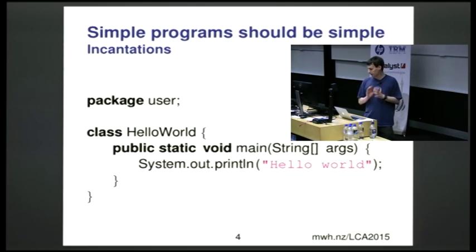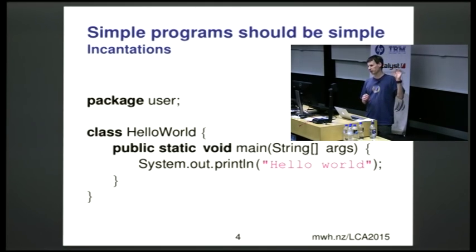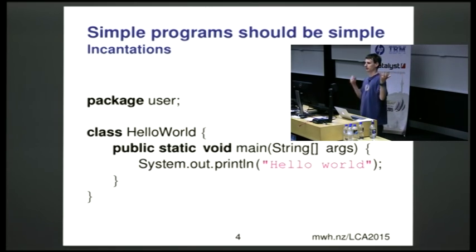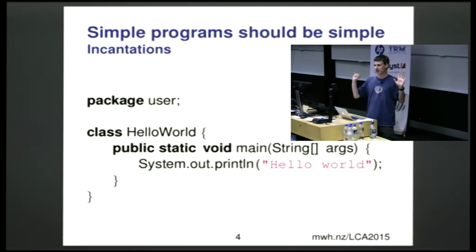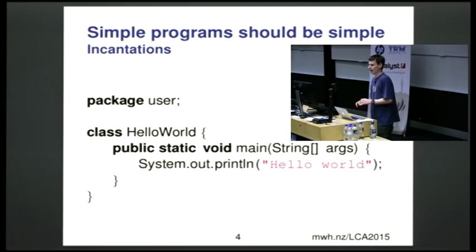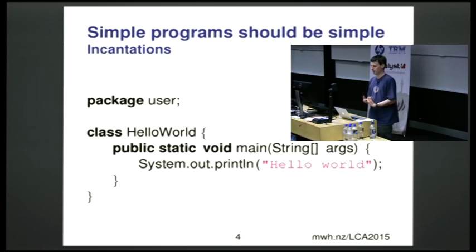When I call something an incantation, I'm not implying it's meaningless — there are actually six distinct concepts in just that one line: public, static, void, main, string, square brackets. If you change any one of those, your program will no longer work. They're all meaningful here and elsewhere in the language, but what they're for right here is making the compiler happy, not making you happy.